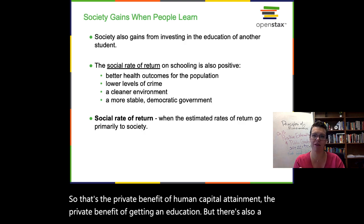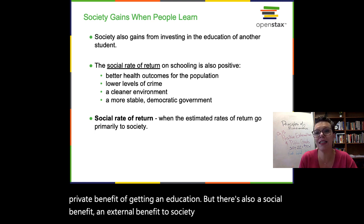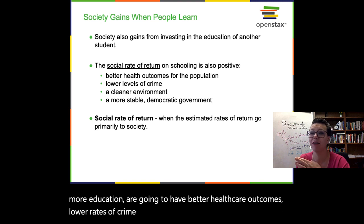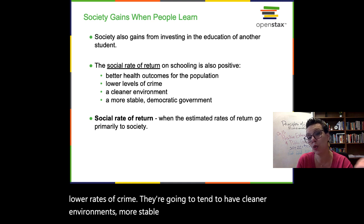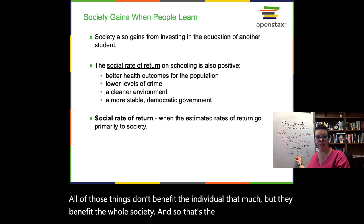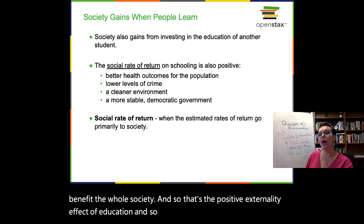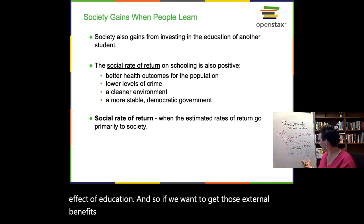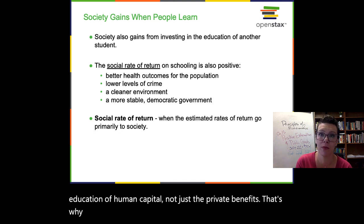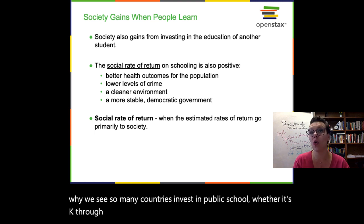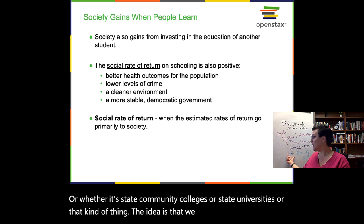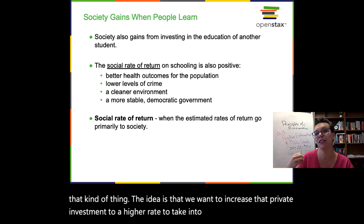But there's also a social benefit — an external benefit to society. Societies where schooling is more prevalent, where people get more education, tend to have better healthcare outcomes, lower rates of crime, cleaner environments, more stable governments, and tend towards democracies. All of those things don't benefit the individual that much, but they benefit the whole society — that's the positive externality effect of education. If we want those external benefits, we need society to consider the total social benefit of education, not just the private benefits. That's why we see so many countries invest in public school, whether it's K through 12, state community colleges, or state universities.